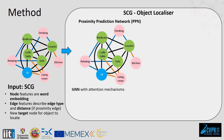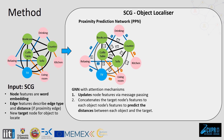The first module is a graph convolution network called the Proximity Prediction Network. It uses an attention-based message passing to update the node features using spatial, context, and common sense information. Then, it concatenates the features of the target node with the features of each object node to predict the distances between the target object and each visible object.